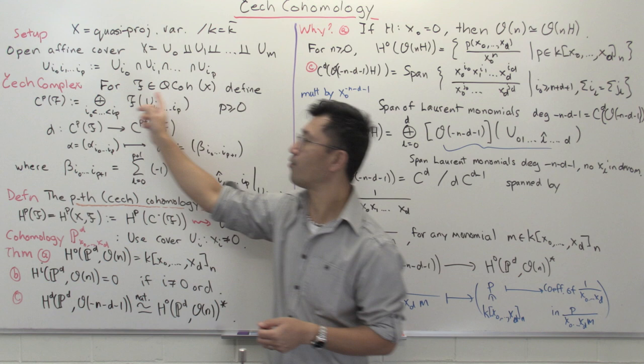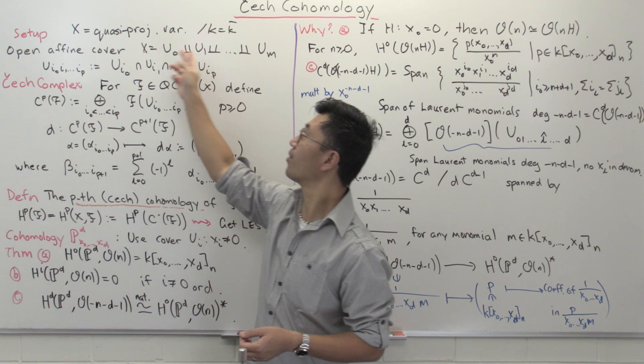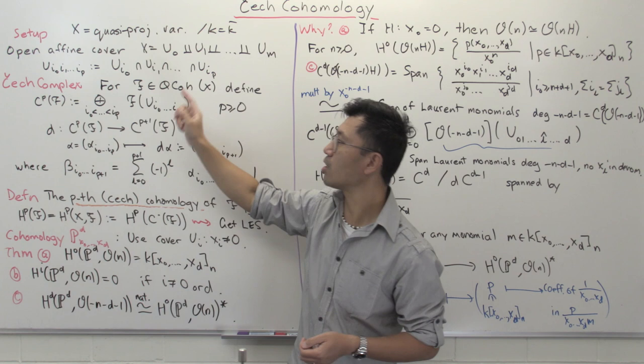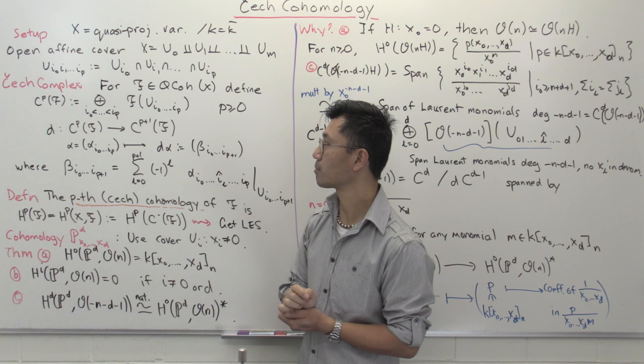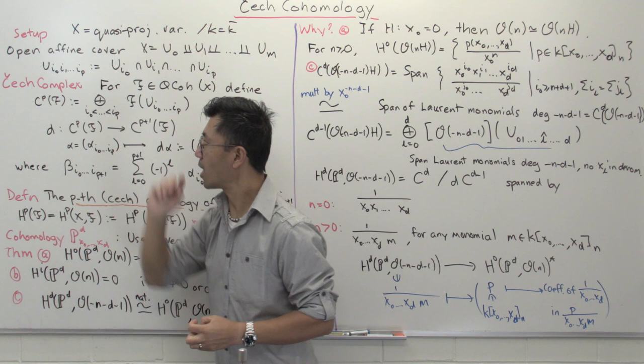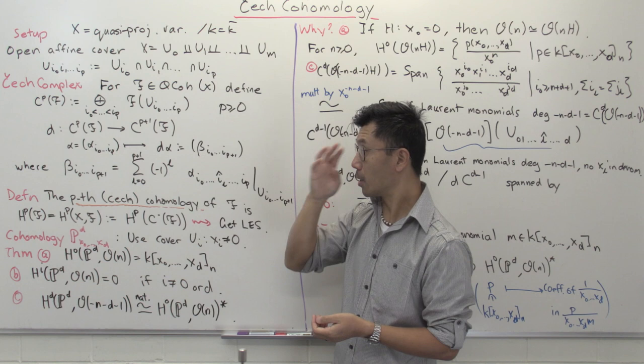Let's suppose F is quasi-coherent and define the pth term in the Čech complex, for p ≥ 0. We look at all p+1-fold intersections: indices i₀ < i₁ < … < iₚ, giving an open affine set which is their intersection, and we take the sections of F over it. We do this for all possible p+1-fold intersections of opens — those are the abelian groups inside this Čech complex. We also need a differential going from Cᵖ(F) to Cᵖ⁺¹(F).